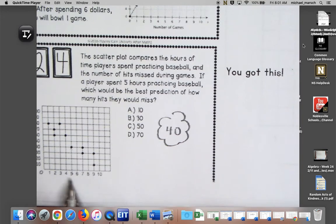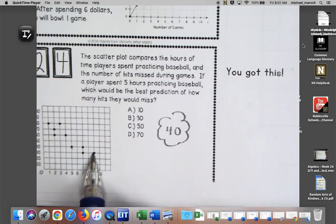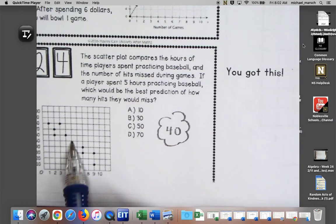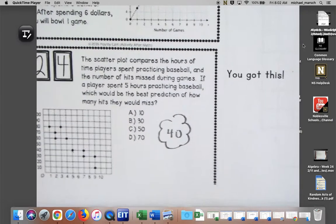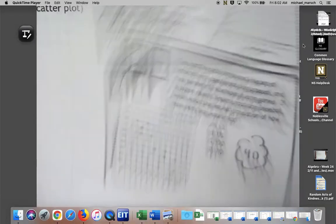The answer here should have been 40, right? Five hours practicing baseball, how many hits would they miss? Yeah, man, why would they have 10, 30, 50, 70? Nope. The answer there was 40. I apologize for the confusion.